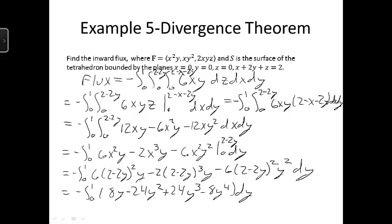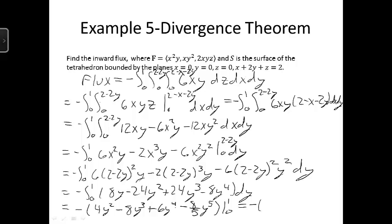Integrating with respect to y, we get minus the integral from 0 to 1 of (8y − 24y² + 24y³ − 8y⁴) dy. This evaluates to minus [4y² − 8y³ + 6y⁴ − (8/5)y⁵] from 0 to 1, which is minus (4 − 8 + 6 − 8/5) = minus (2 − 8/5) = minus(2/5), giving a final answer of −2/5.